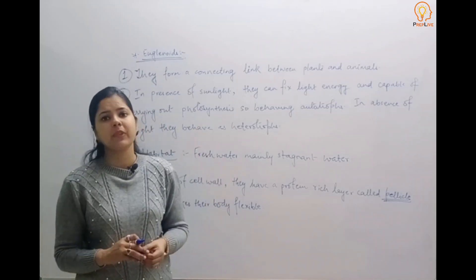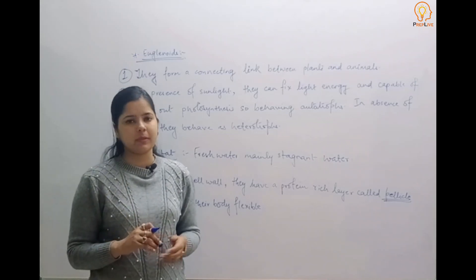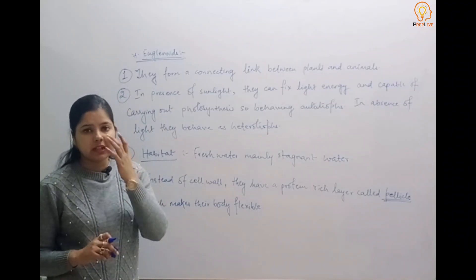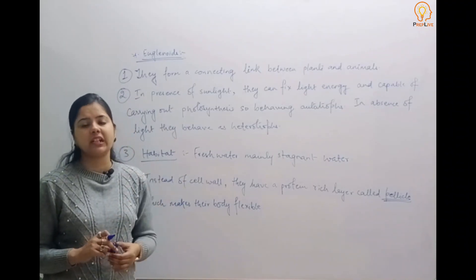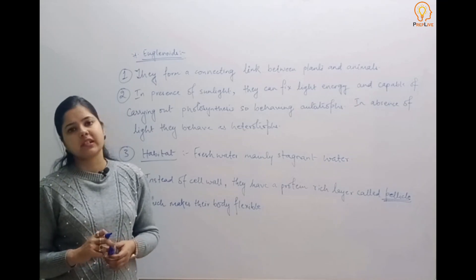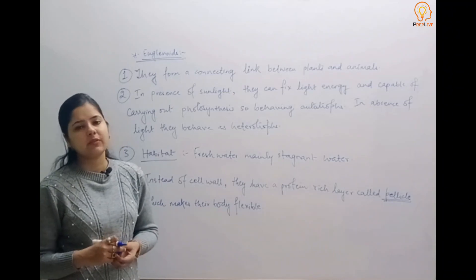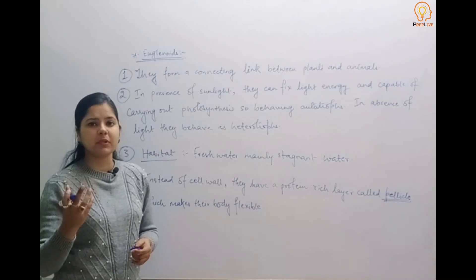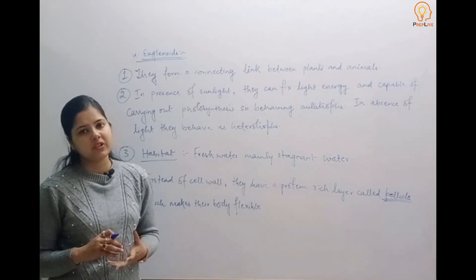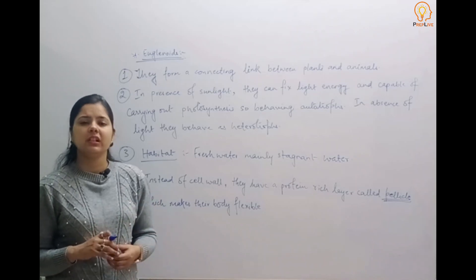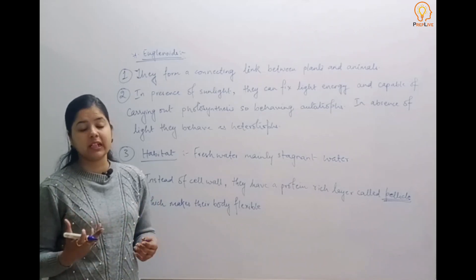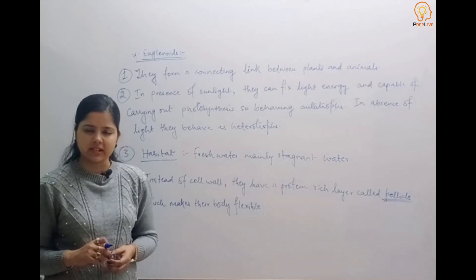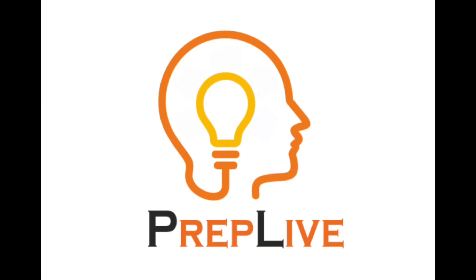This was about the third category of Kingdom Protista. We covered chrysophytes, euglenoids, and dinoflagellates — these three categories of Kingdom Protista. The next two categories of Kingdom Protista will be discussed in the next lecture. Additionally, in the next lecture we will cover the general features of Kingdom Fungi — its general nature, habitat, and characteristics. Thank you.